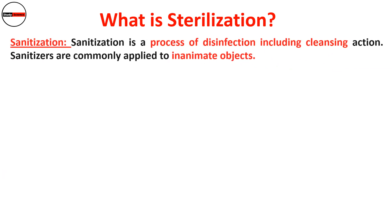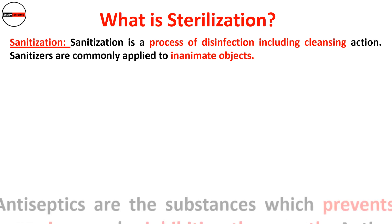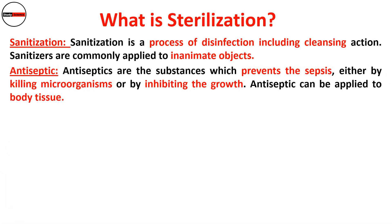The next term is sanitization. Sanitization is a process of disinfection including a cleansing action; sanitizers are normally applied to inanimate objects. The next term is antiseptic. Antiseptics are substances which prevent sepsis either by killing microorganisms or by inhibiting the growth of microorganisms. Antiseptics can be applied to body tissue.